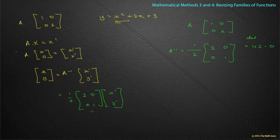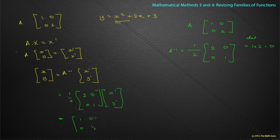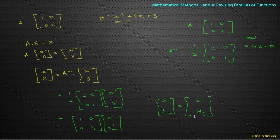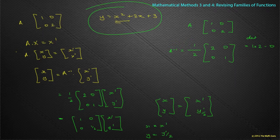Simplifying: that's [1, 0; 0, ½] multiplied by (x-dashed, y-dashed). Doing row times column: 1 times x-dashed plus 0 times y-dashed gives x-dashed, and 0 times x-dashed plus ½ times y-dashed gives y-dashed over 2. So I now know that x equals x-dashed and y equals y-dashed over 2, and I can substitute into the original equation to find my transformed equation.